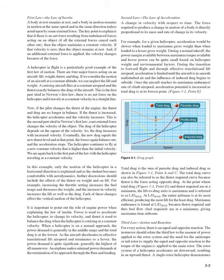When a helicopter is on a normal approach, the power demand is generally in the middle range and total drag is at its lowest. As the aircraft decelerates to effective translational lift airspeed and terminates to a hover, the power demand is quite significant — generally the highest of all maneuvers. An airplane makes minimal power demands at the termination of its approach through the flare and landing.